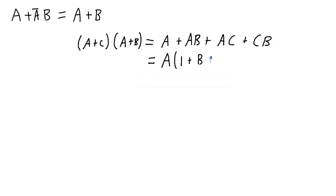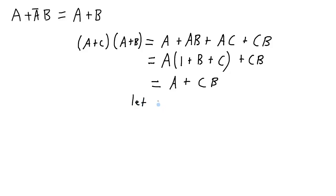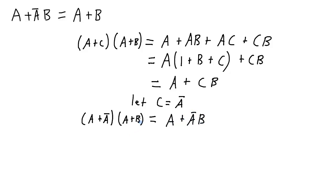In each one of these parts of the expression, there is a common a factor, so I can factor a out. Factoring a from the first term leaves a; from the second, b; from the third, c OR cb. ORing expressions with 1 leaves 1, so this becomes a AND 1. Anything ANDed with 1 is simply that expression, so that whole part becomes a, leaving a OR cb. Now letting c equal NOT a: on the left side we get a ORed with NOT a ANDed with (a OR b), and on the right side we get a OR (NOT a AND b). On the left side, a OR NOT a equals 1, so the whole term goes away, and we're left with a OR b on the left side, equal to a OR NOT(a)b — which is exactly what I was trying to prove.